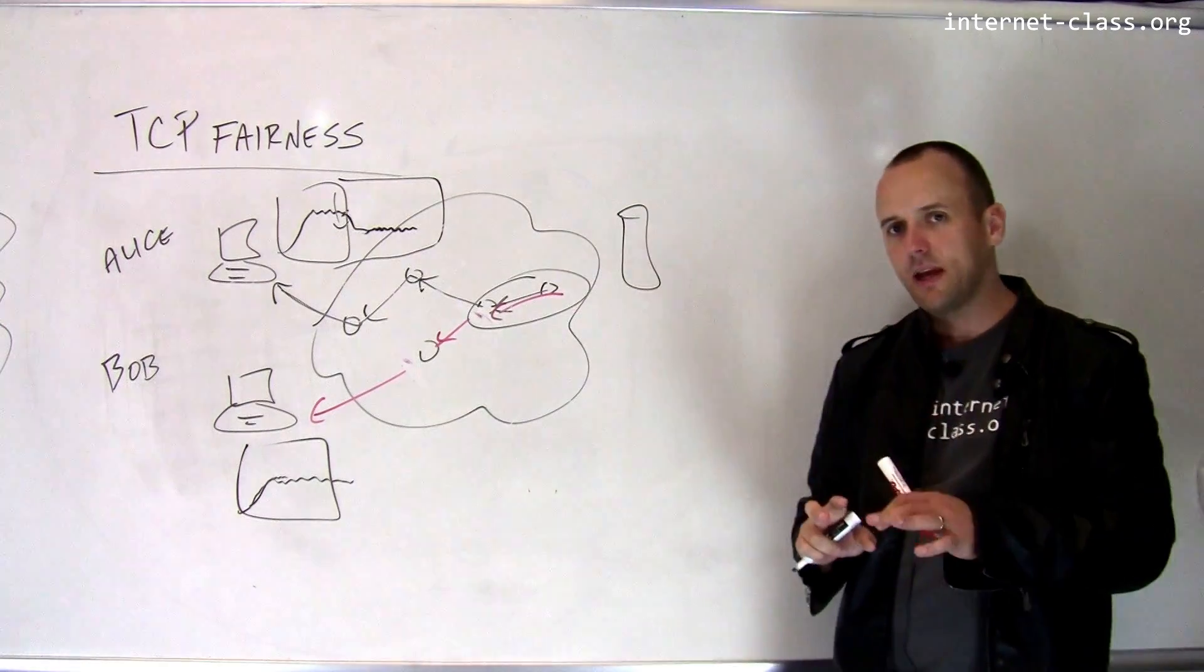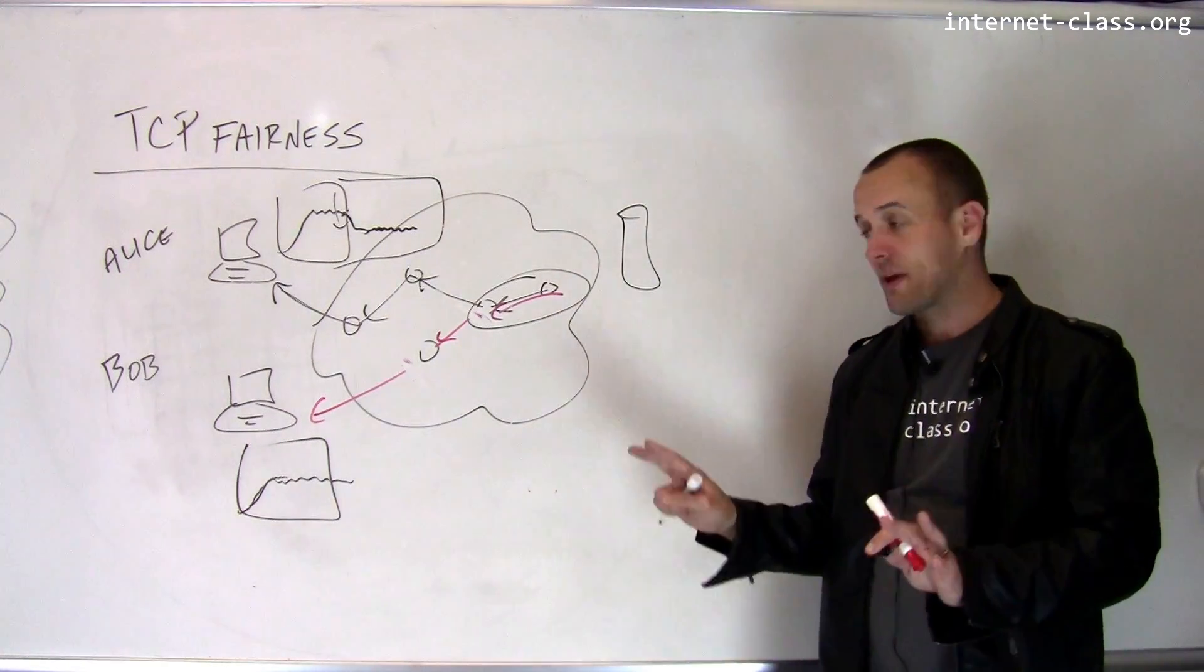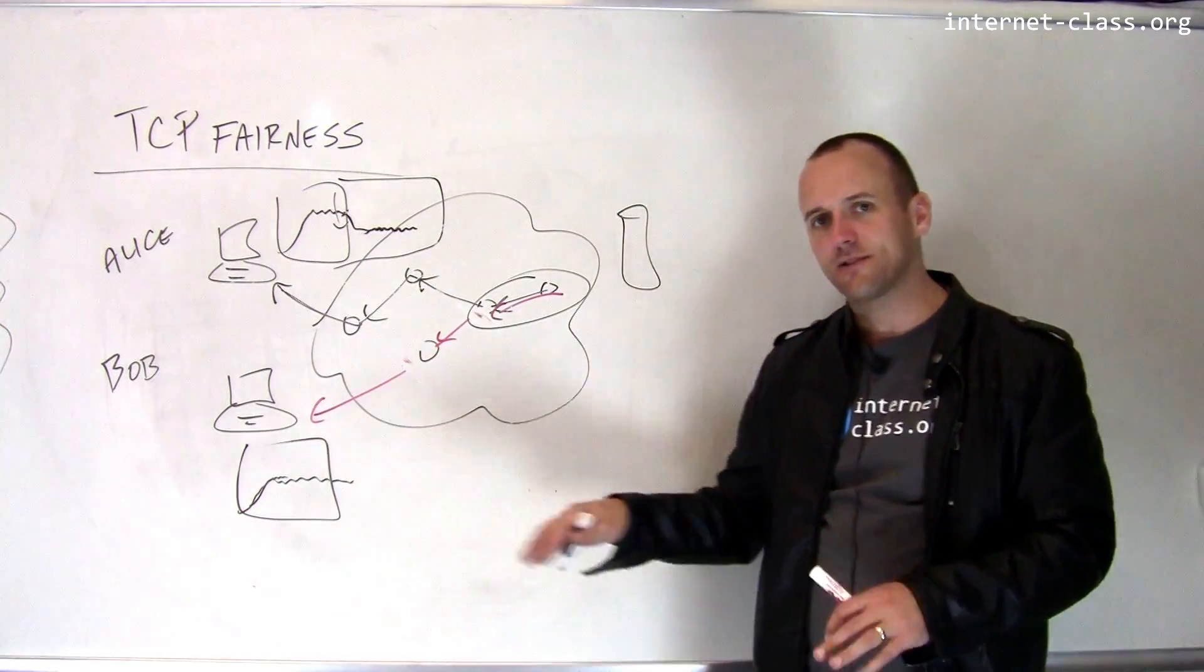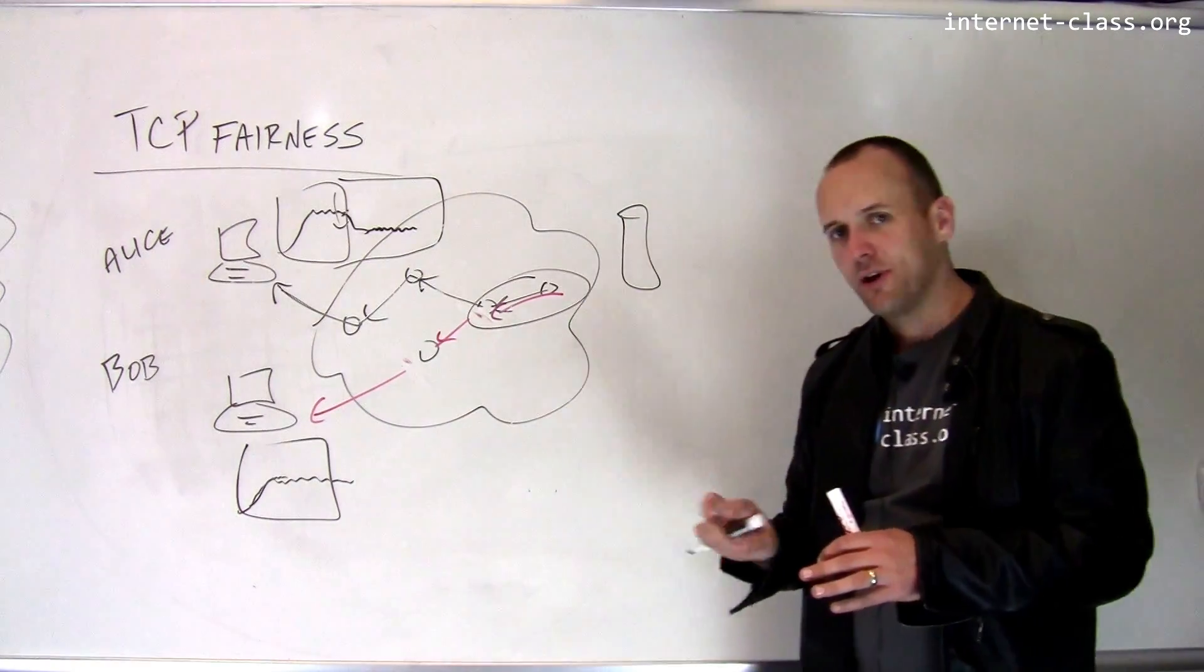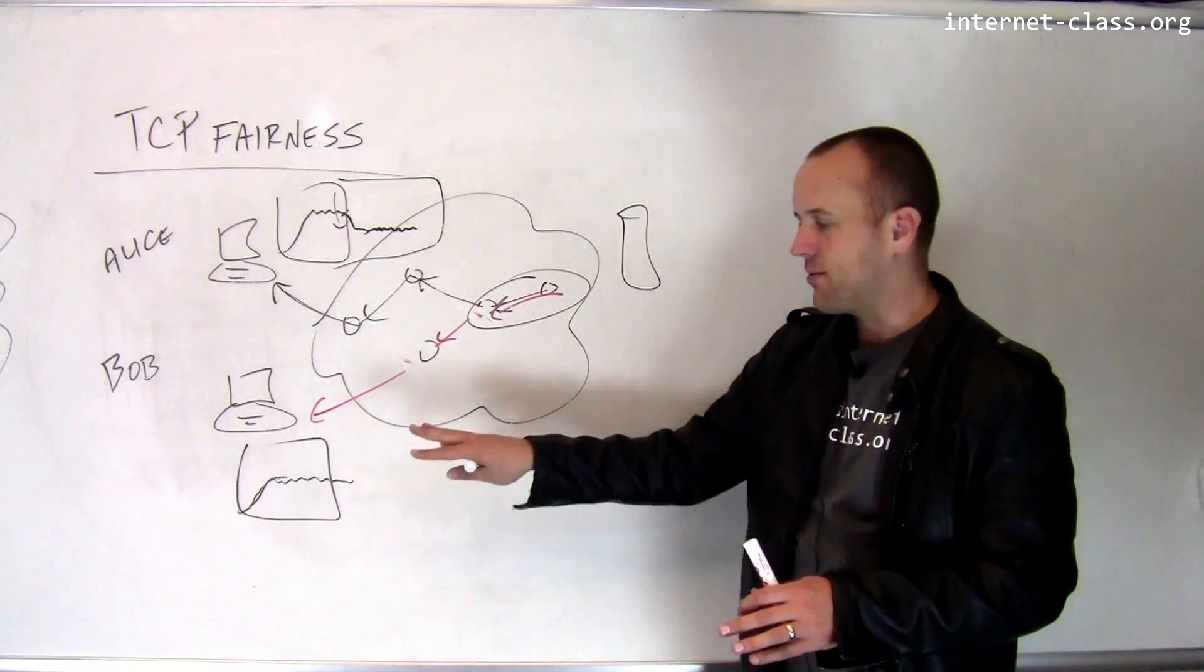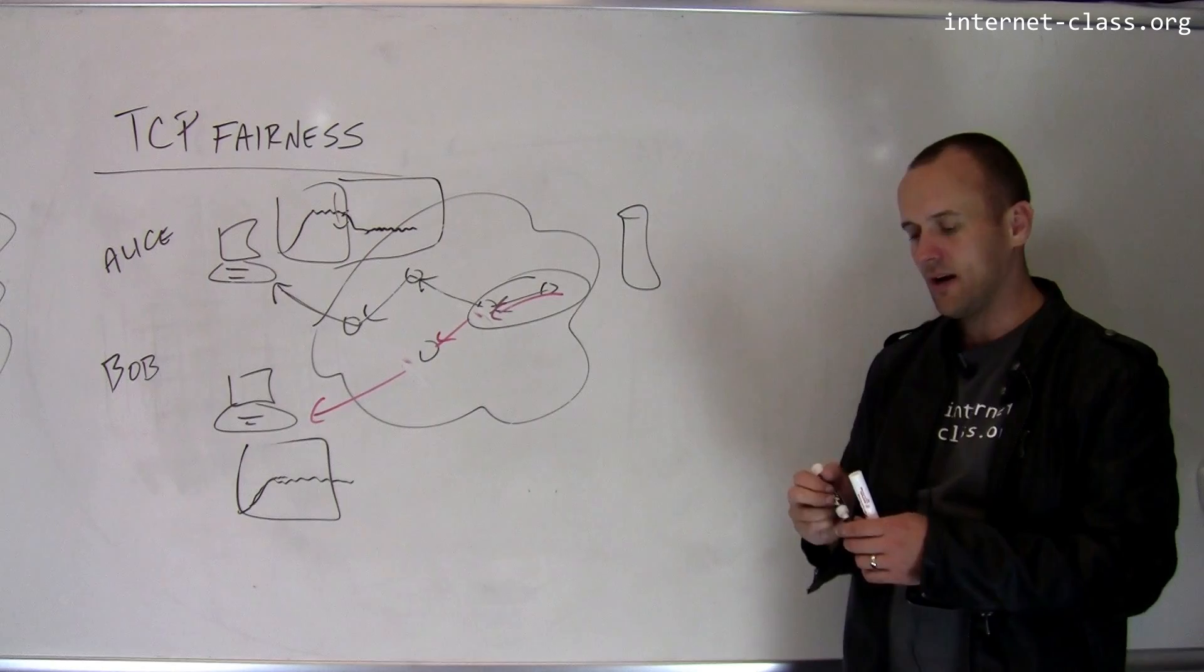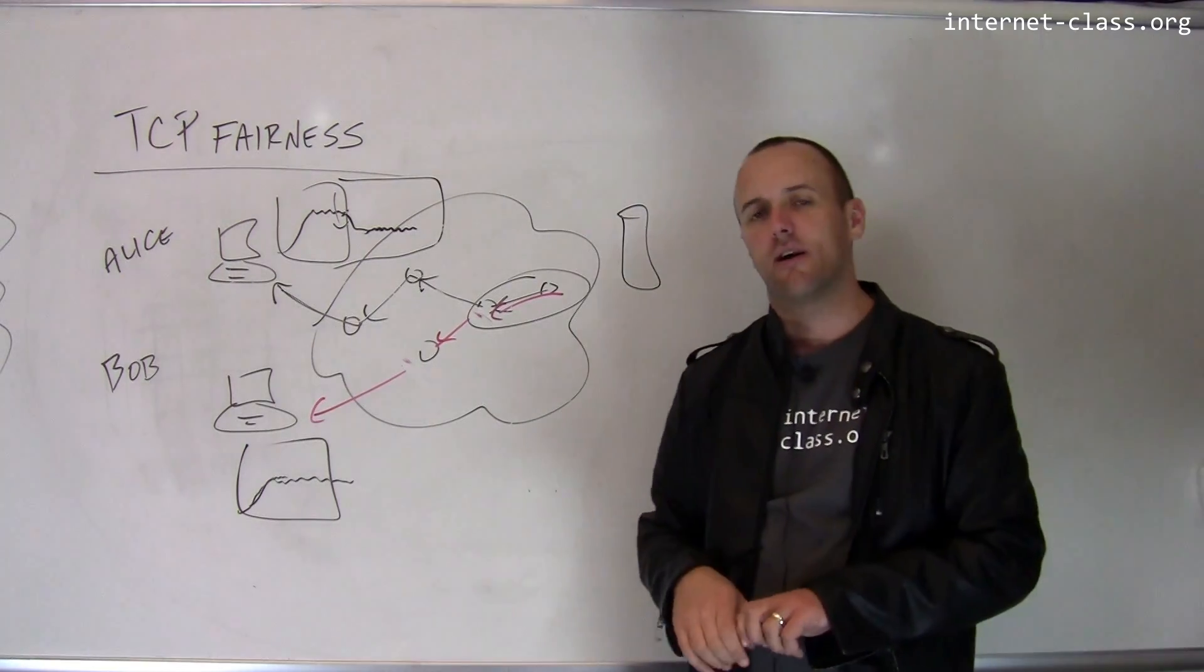So this is how TCP, again, this is kind of cool because without any explicit coordination between Alice and Bob, TCP is still able to divide resources within the network so that both Alice and Bob receive some fair share of the network resources.